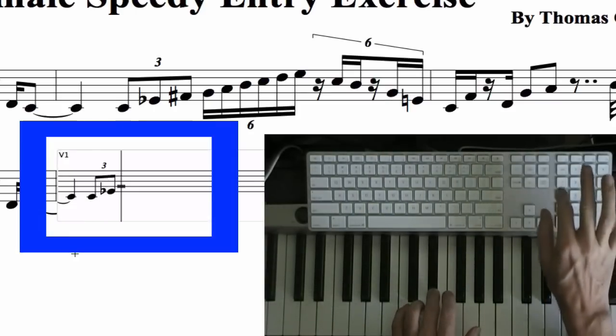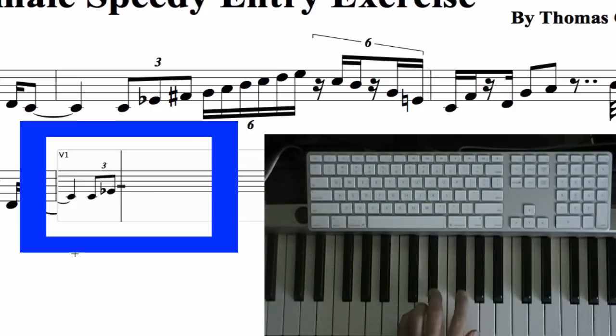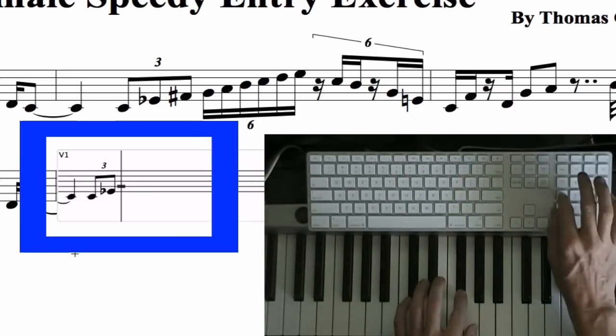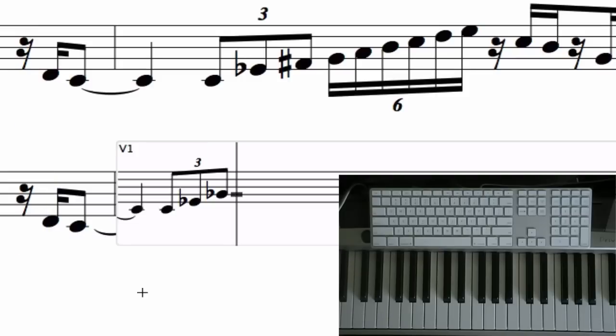And press 4 again. And play F sharp and press 4 again. Now Finale put in a G flat. What I need is an F sharp. I can change that by pressing 9.